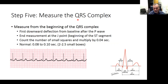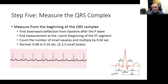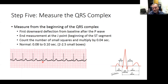Step five: measure the QRS complex. We know that if the QRS complex is wider than normal, there is a pathology. You measure from the first downward deflection, starting your caliper there and measuring all the way up to the J point, which is where the QRS complex returns to baseline. Normally you want 0.08 to 0.10 seconds, which is two to two-and-a-half small boxes. Anything different from that is an indication of pathology that we'll get into in later lectures.